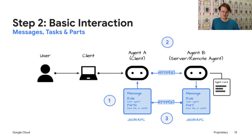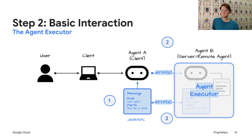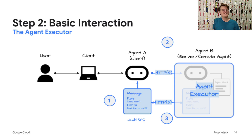When Agent B gets a request, if the request is simple and completes quickly, it might respond directly with a message containing the answer. But how does Agent B actually process a request when Agent A calls it? That's the job of the Agent Executor — it's a class that you write, and it links the generic A2A protocol plumbing handled by the A2A SDK and the specific logic of your agent. This is what makes the agent into a Lego that can be connected to other agents. The SDK worries about HTTP, JSON RPC, and event management, while with the Executor you focus on what happens when the agent processes its responses.